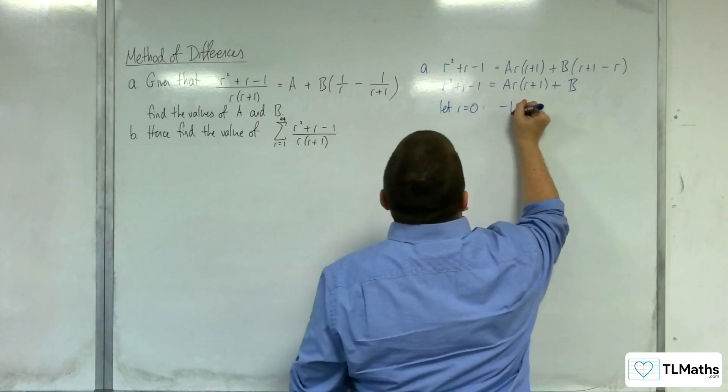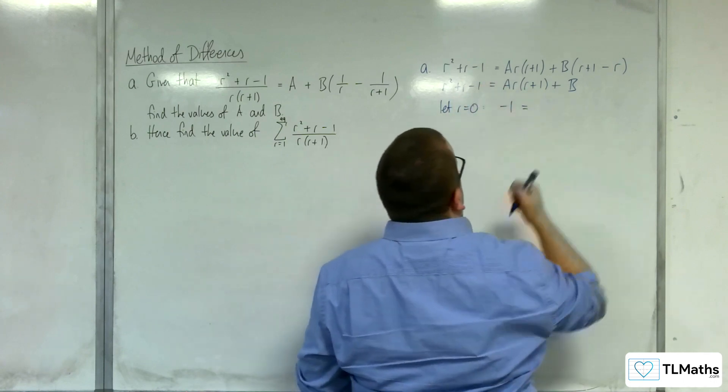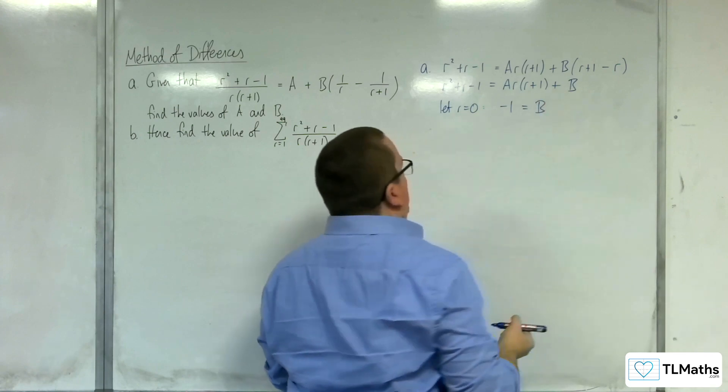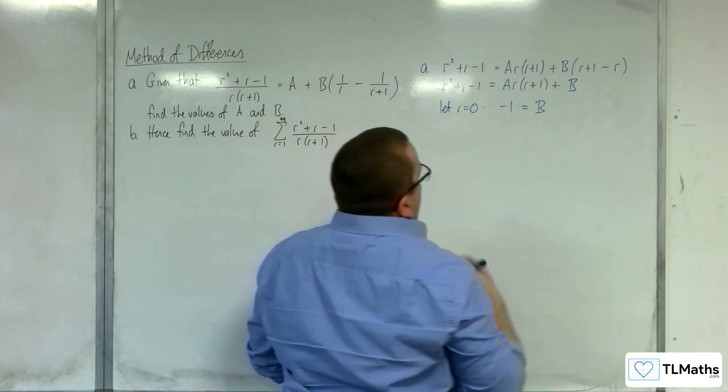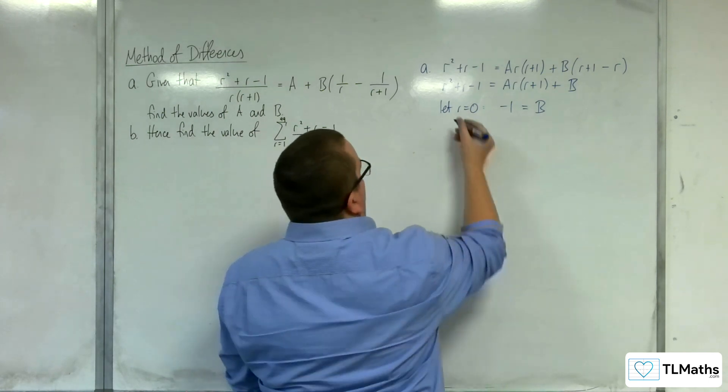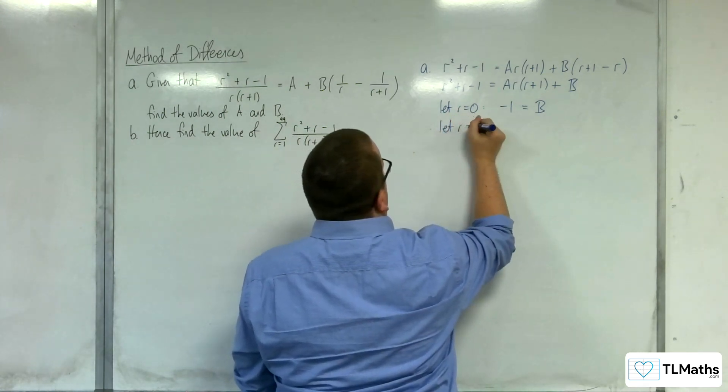So minus 1 on the left hand side, and that's going to knock out that term, so that means that b must be minus 1. And let's just choose another value that I can substitute in, so let's try r is 1.